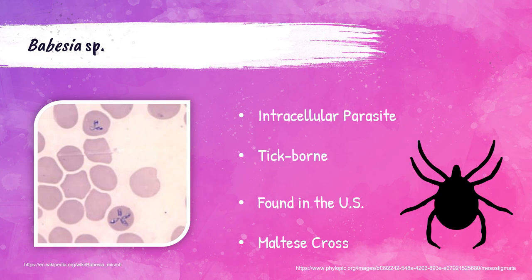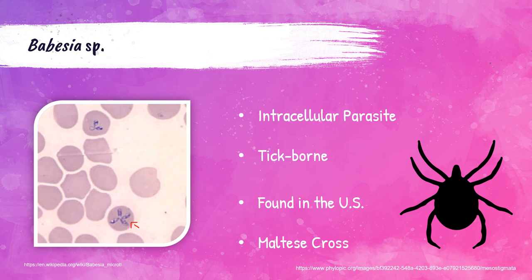Babesia is another intracellular parasite, meaning you will see it present inside the red blood cells. It's spread by a bite from a tick and is primarily present in the northeast and upper midwest of the United States. Some patients infected with this intracellular parasite are asymptomatic, while others have a flu-like illness. It can be severe as the infection can cause hemolytic anemia — the premature rupture or lysing of red blood cells. The hallmark of Babesia infection is the Maltese cross. If you ever see a Maltese cross on a board exam, it's Babesia — that's always going to be the answer.